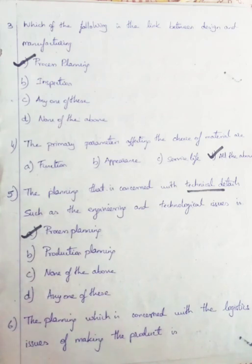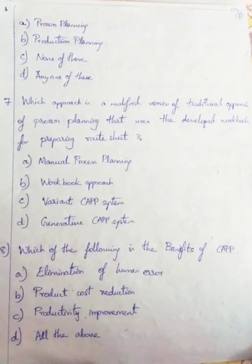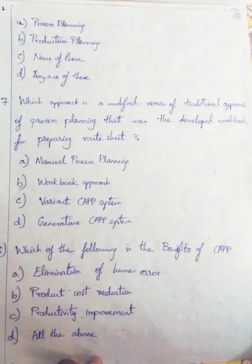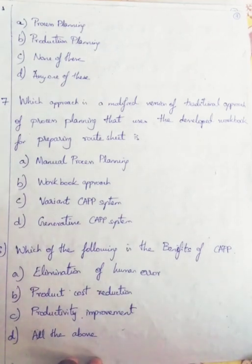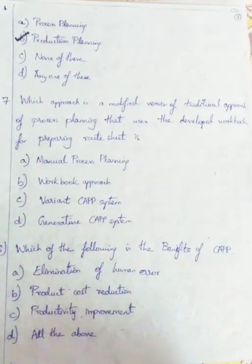Question 6: The planning which is concerned with the logistics issues of making the product is Option A: Process Planning, Option B: Production Planning, Option C: None of these, Option D: Any one of these. We go with Option B, Production Planning, since logistics and transportation of product materials fall under production planning.